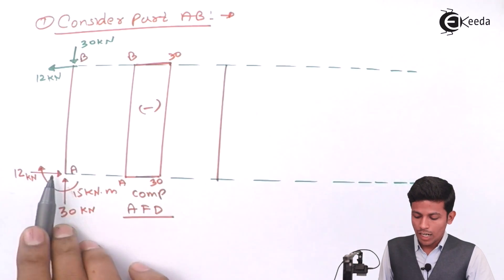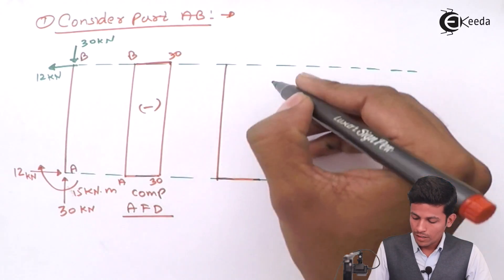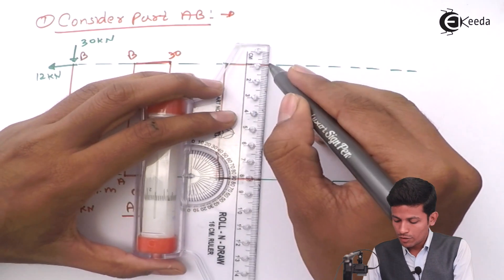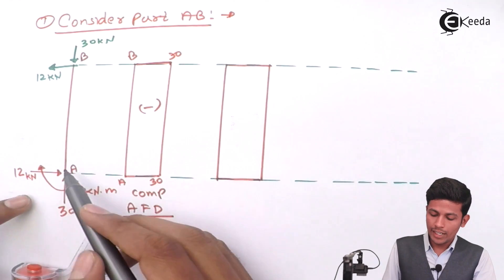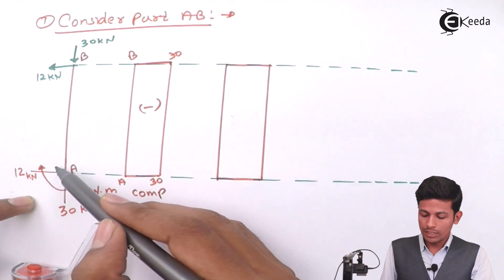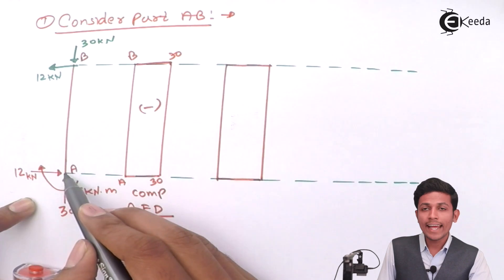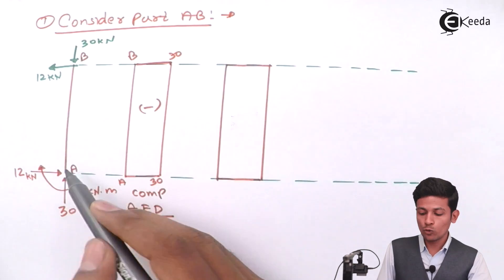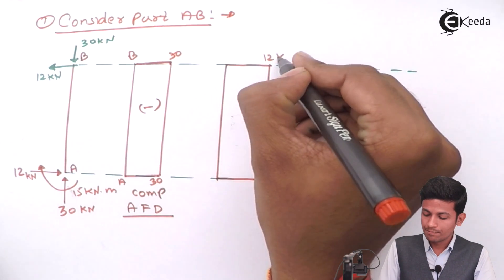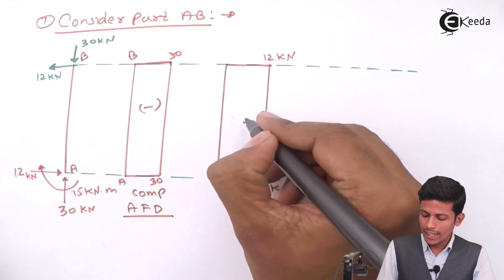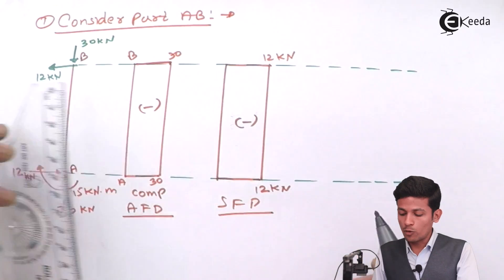Now draw the SFD for member AB. Shear force at A (left) = 0; shear force at A (right) = −12 kN. It comes out negative, so the SFD goes to the minus side. You can verify this by calculation or draw it directly.